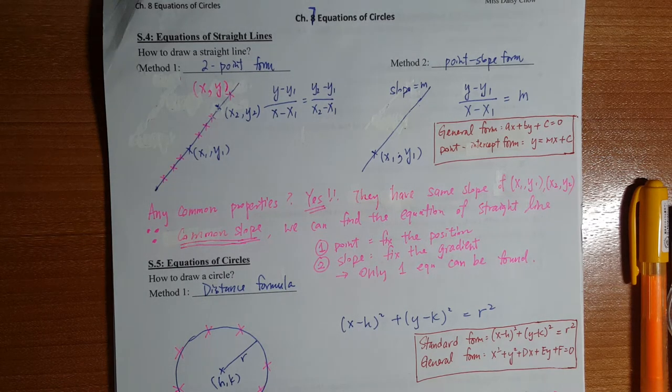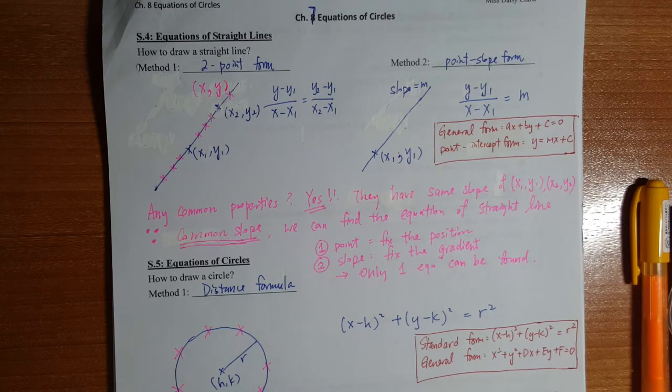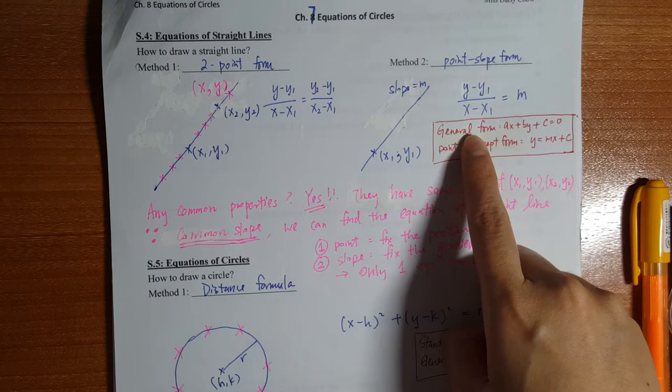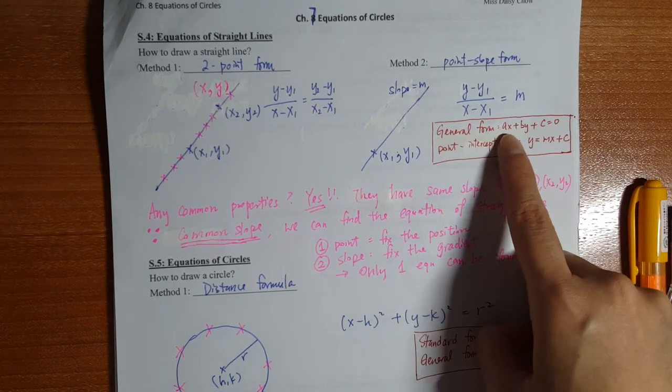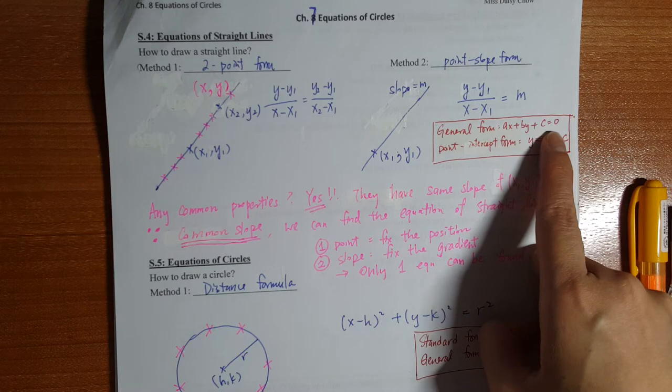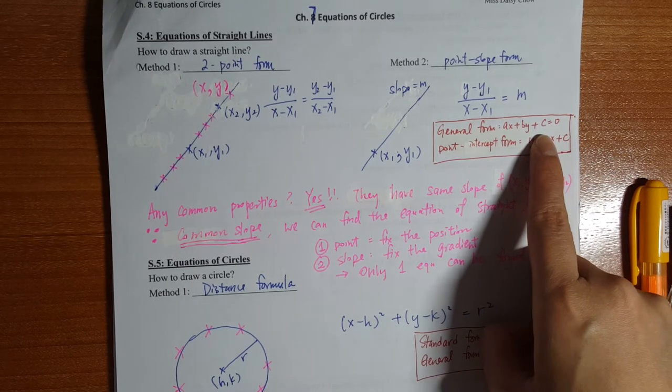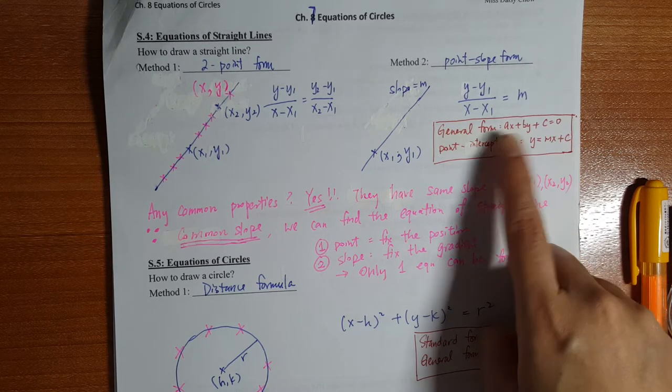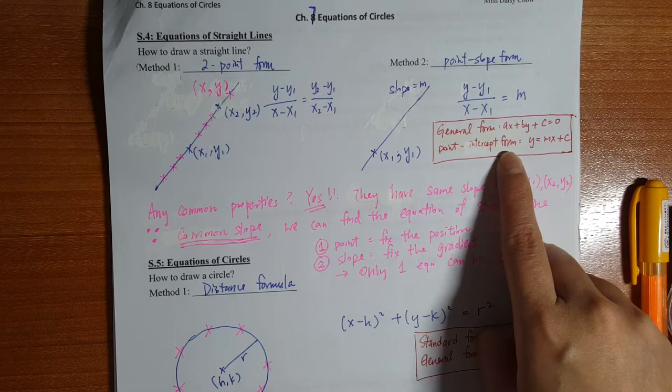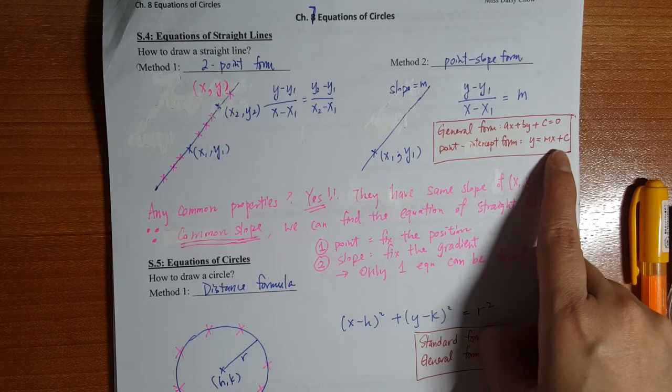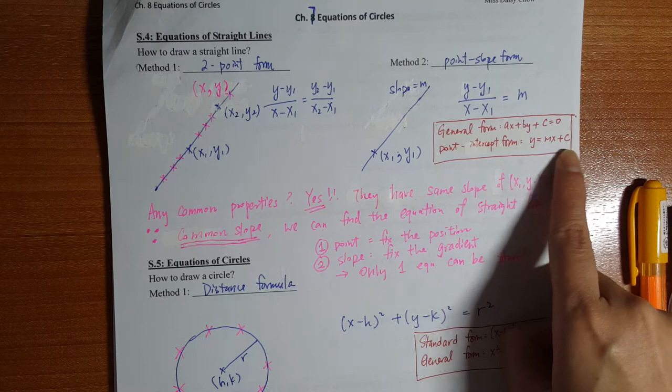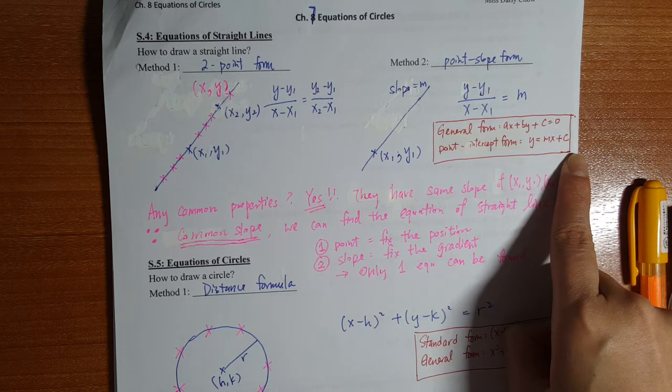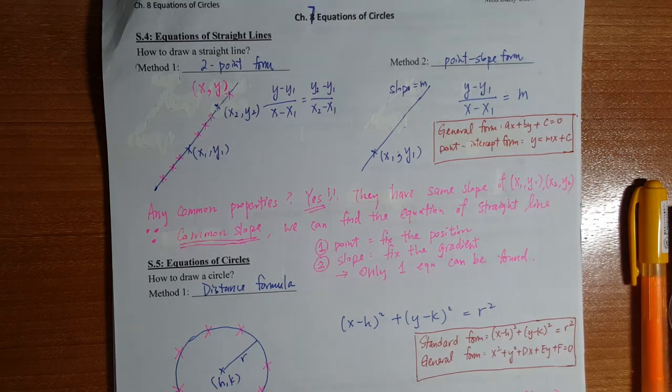So in S4, when we learned the equation of straight line, we learned that there are mainly two forms. Either your answer can be in general form, that means you expand it, and then you will have AX plus BY plus C equals to zero. And then another form would be the points intercept form, Y equals to MX plus C. Both answers can be your final answers in DSE.